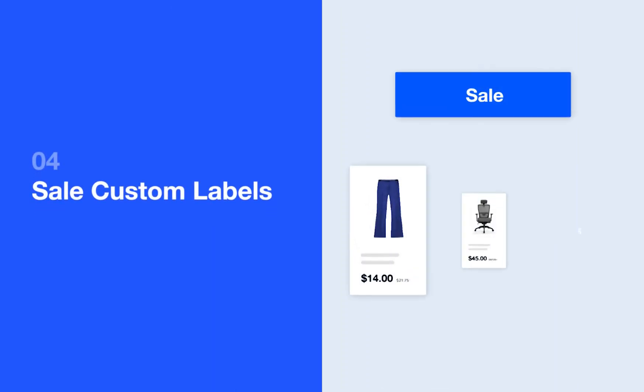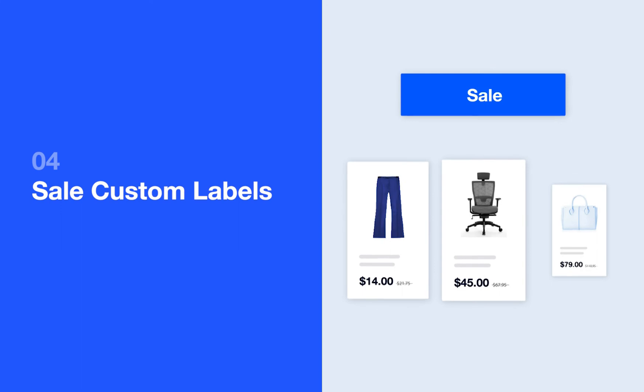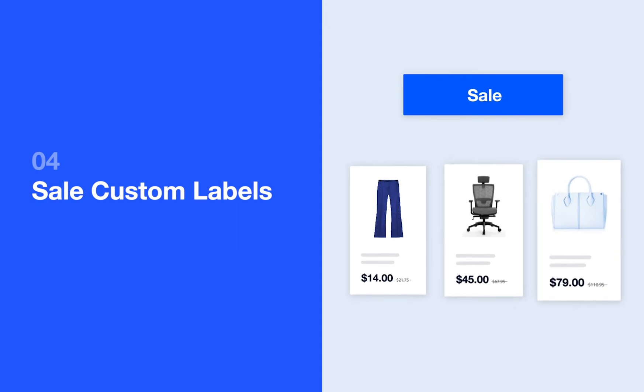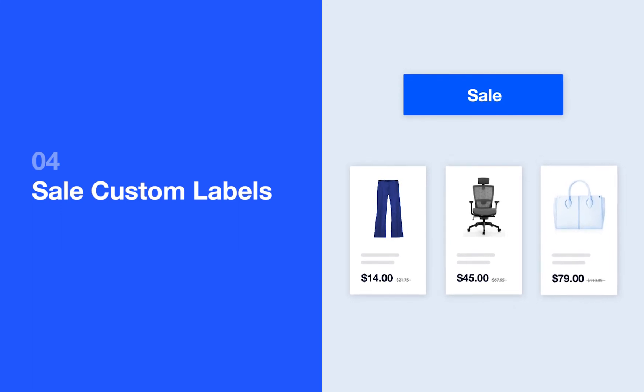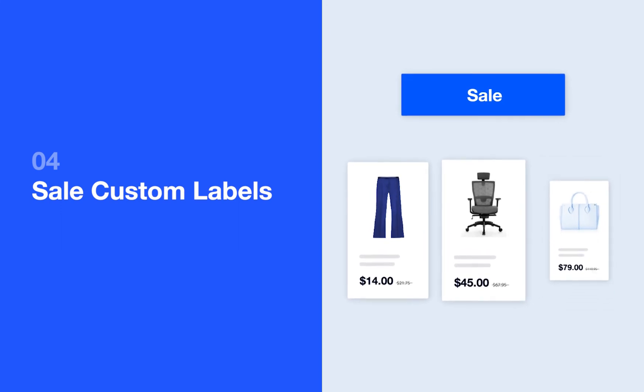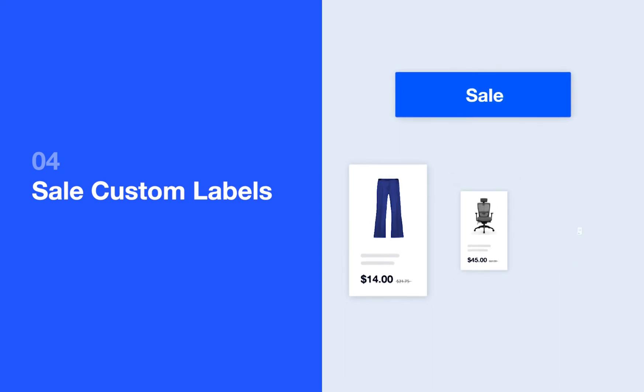Another great custom label is for on-sale items. By tagging items as on-sale, you can increase the bids as these items are far more likely to convert with the price discount.